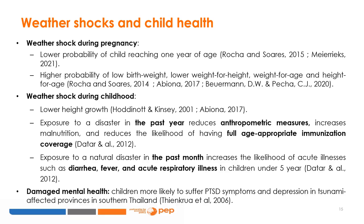Exposure to a natural disaster also reduces the likelihood of having full age-appropriate immunization coverage. Dittar and co-authors, 2012, also observed immediate negative consequences on illness — diarrhea, fever, and acute respiratory illness are more likely to occur in children under five in the month following the weather event. Exposure to extreme weather events also determines an increase in mental health problems. In southern Thailand, seven- to fourteen-year-old children were more likely to suffer PTSD symptoms and depression in provinces affected by the 2004 tsunami, two to nine months after the shock, according to Thankrua and co-authors, 2006.